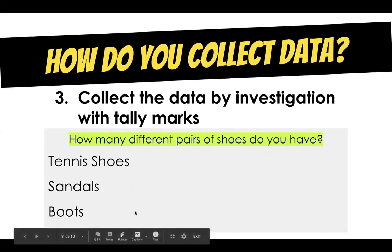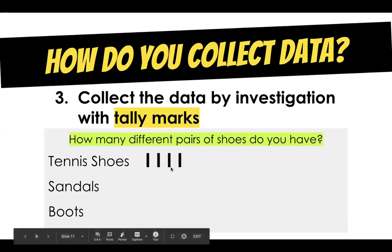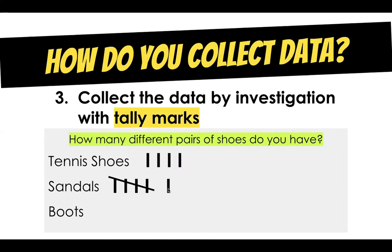I went in my closet and I counted that I have four pairs of tennis shoes — those are my four tally marks. I have six pairs of sandals. If you've never made tally marks before, we do four up and down and then the fifth we slash through, so it's a group of five. As our tally marks get bigger we can count by fives. I have six pairs of sandals and three pairs of boots.